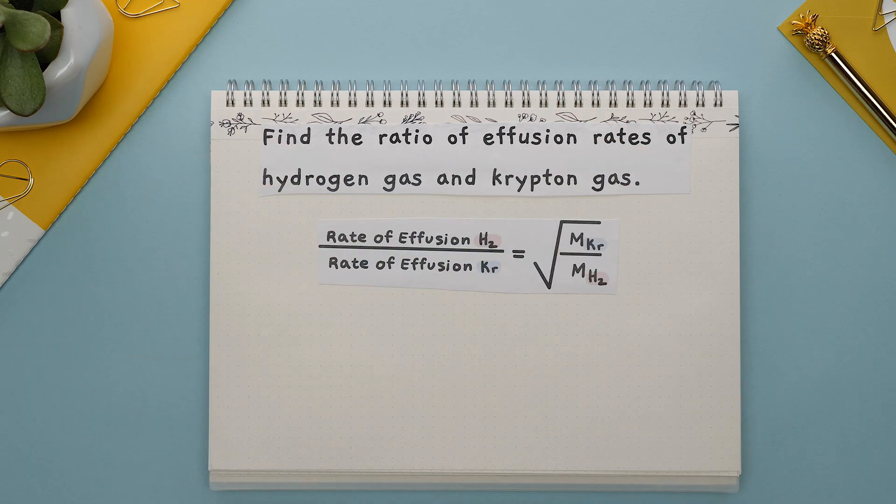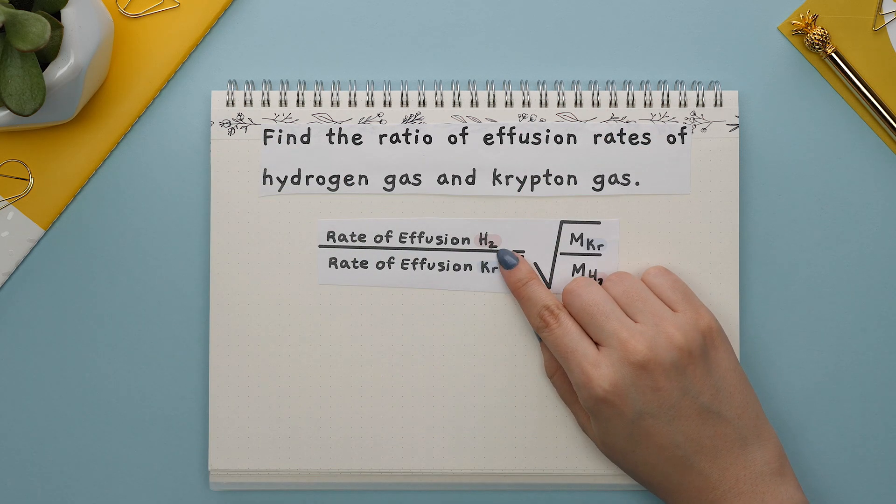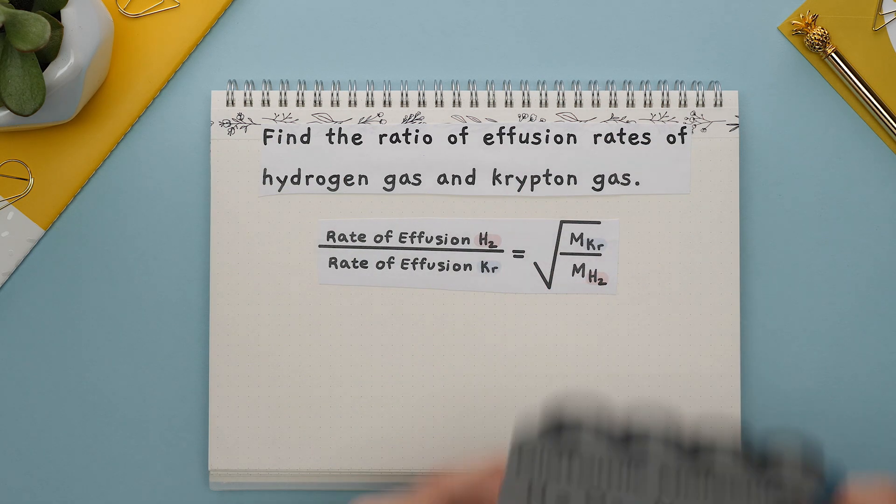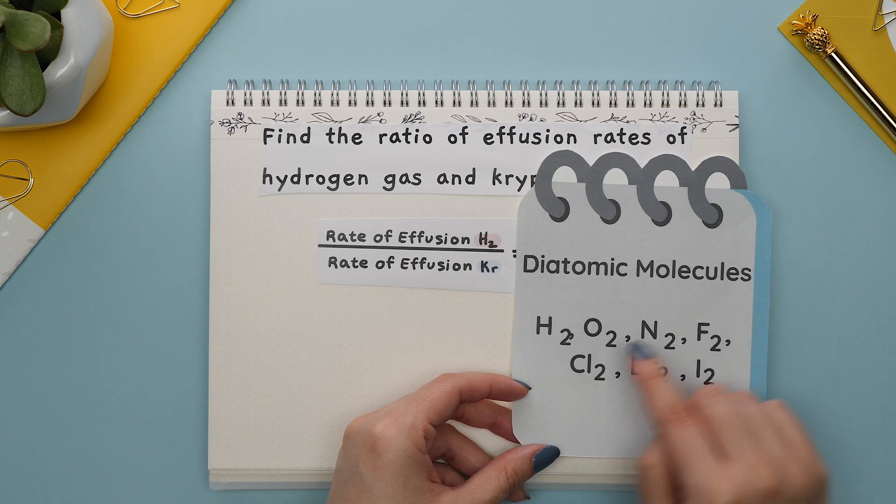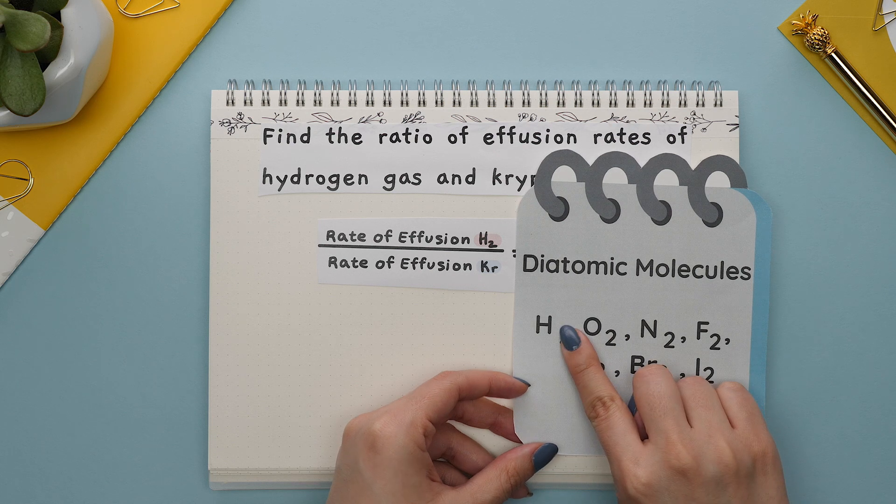Let's say we were asked to find the ratio of effusion rates of hydrogen gas and krypton gas. Our formula would look like this where the rate of effusion for hydrogen gas would be here. Recall that hydrogen is a type of diatomic molecule meaning it exists in pairs so this would be H2 not just H.